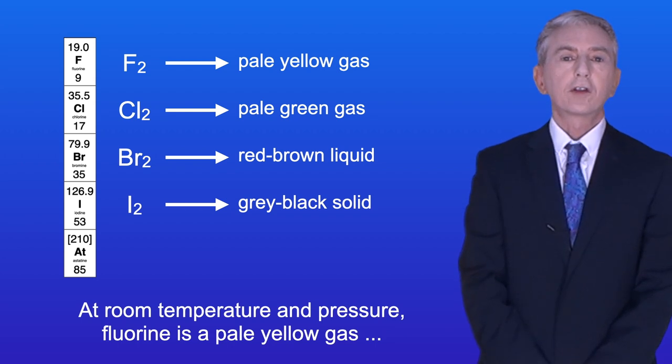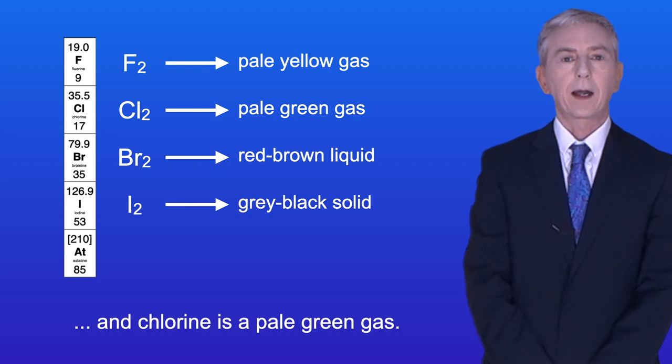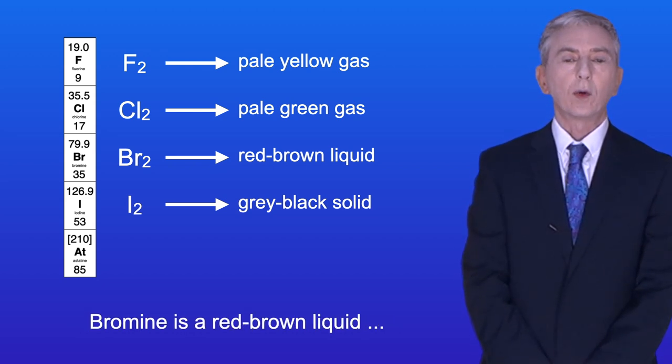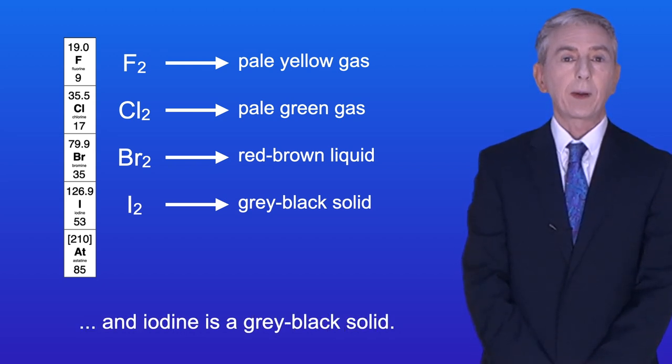At room temperature and pressure, fluorine is a pale yellow gas, and chlorine is a pale green gas. Bromine is a red-brown liquid, and iodine is a grey-black solid.